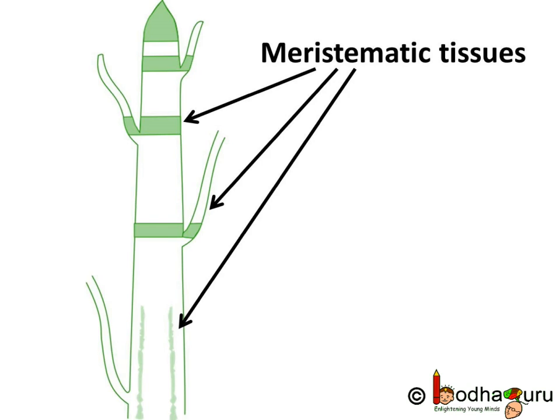Dead cells don't divide. So, only a few tissues grow throughout the life in plants and these are called growing or meristematic tissues. The meristematic tissues consist of undifferentiated cells — that is, cells that haven't been assigned a specific role within the plant. But a lot of tissues in plants stop growing after a certain time and become permanent tissues. And still, trees become so big and tall. So in plants, the growth is limited to certain regions only.